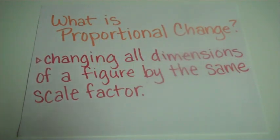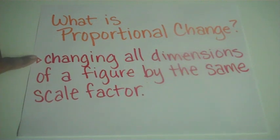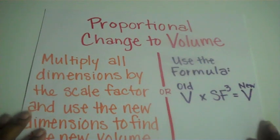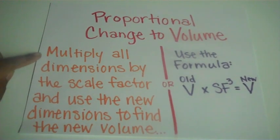Alright, so now that we've seen that short demonstration to explain proportional change to volume, let's recap. Remember, proportional change is when you're changing all the dimensions of a figure by the same scale factor. There's a couple of ways that we can see proportional change to volume. We can multiply all the dimensions by the same scale factor and then use the new dimensions to find your new volume.